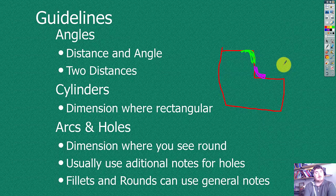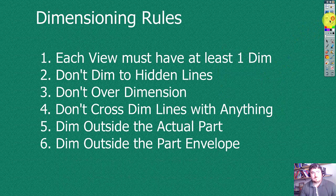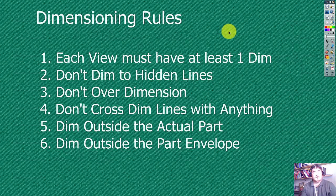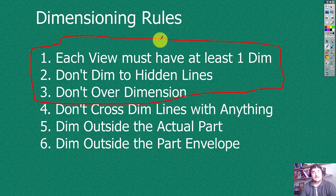Most books have pages and pages of rules for dimensioning. I have six. Each view that you draw must have at least one dimension, of course there are exceptions. The main exception is if you're using auxiliary views just trying to get to another auxiliary view. Don't dimension to hidden lines. If you have something that's in a hidden line, you want to dimension it to a section or something like that. Don't over-dimension. These first three are the do-not-break rules. Don't ever break those.